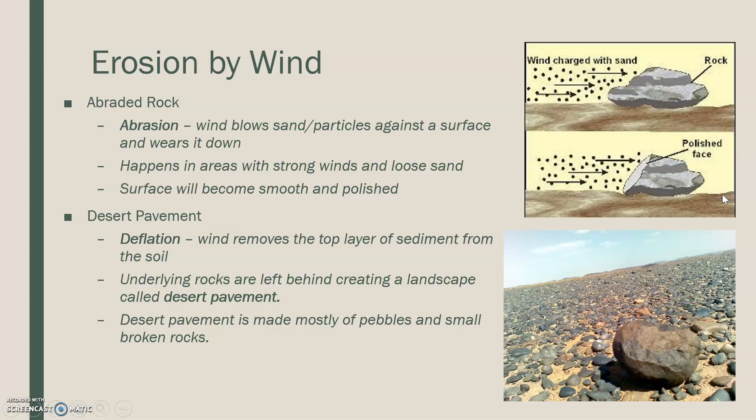Erosion by wind can happen mostly through abrasion, which we've already talked about. Abrasion is basically the breaking down through wind, water, or ice. In this context, abrasion is when sand is being blown by the wind, such as in a desert, and particles hit the side of rocks and basically wear them down.